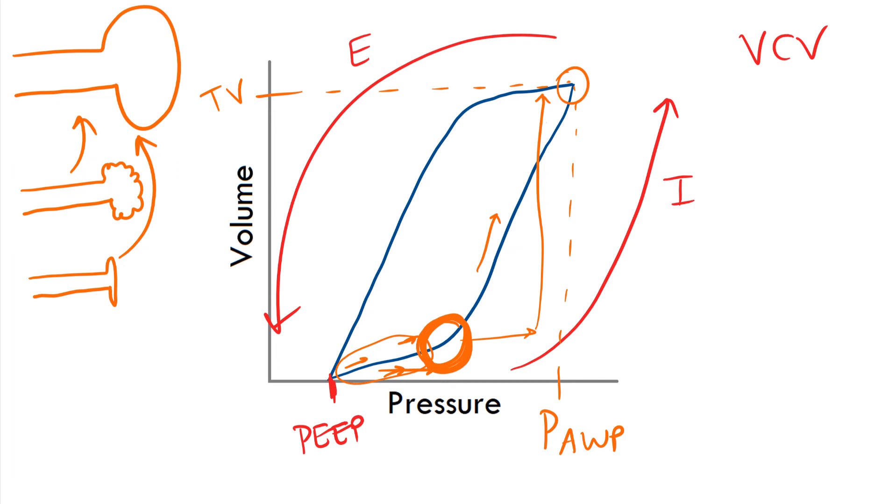Now, let's start the exhalation process. Now, as we go down to exhalation, you see a second inflection point, also known as your upper inflection point. Now, this is the point where you start de-recruiting units.